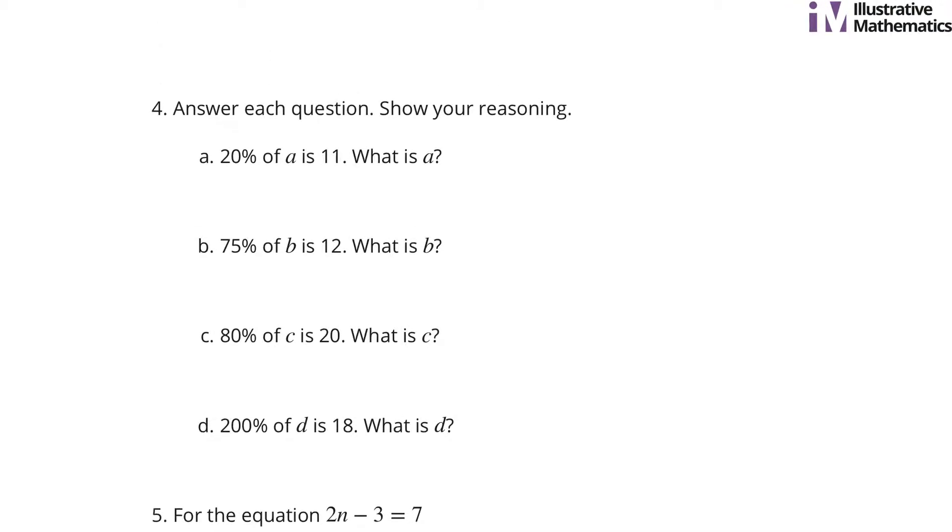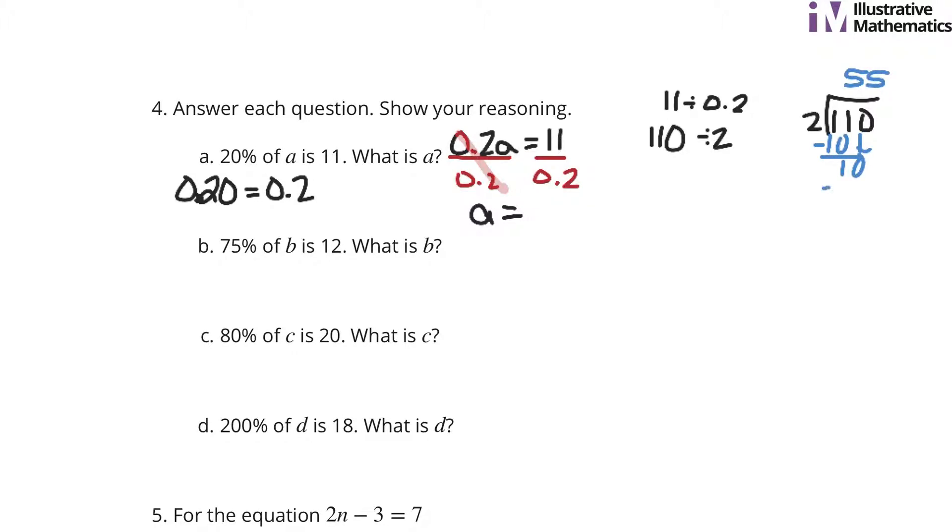Question four. Answer each question. Show your reasoning. 20% of A is 11. What is A? Well, 20%, once again, is the same thing as 20 hundredths, which is the same thing as two-tenths. So we are looking at the equation here. Two-tenths times A equals 11. And so if I divide by two-tenths on both sides, we end up with A equals whatever 11 divided by two-tenths is. That's the same thing if I multiply by 10. It's 110 divided by two. And if I take 110 and divide it by two, two goes into 11 five times. Subtract away to 10. You're left with 10. It goes in another five times. And you have a remainder of zero. So that means A is going to equal 55.